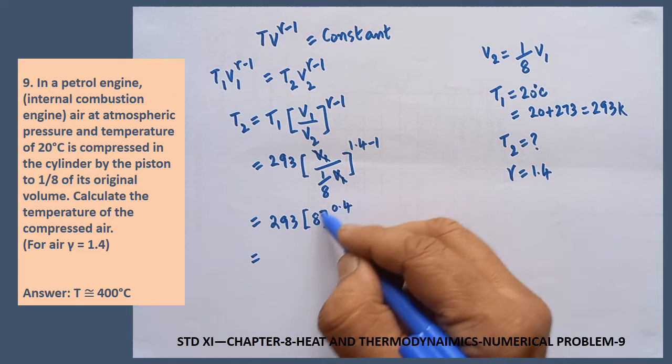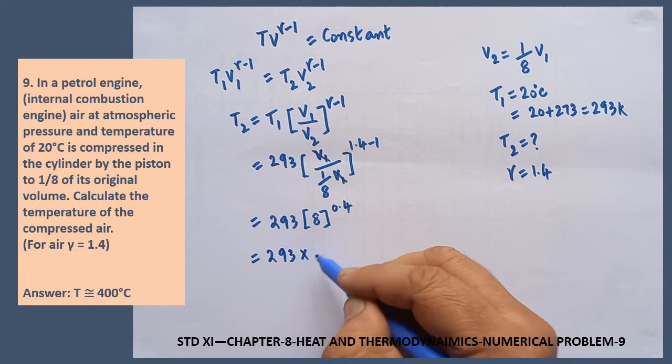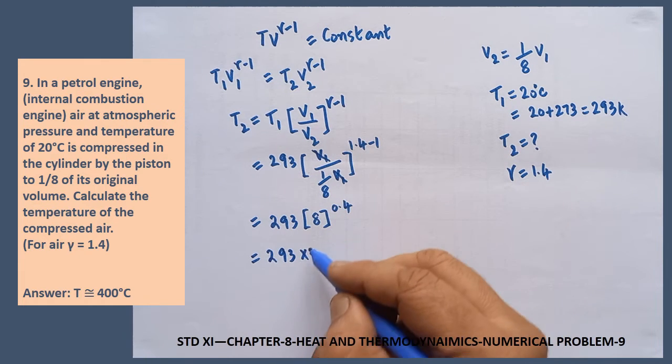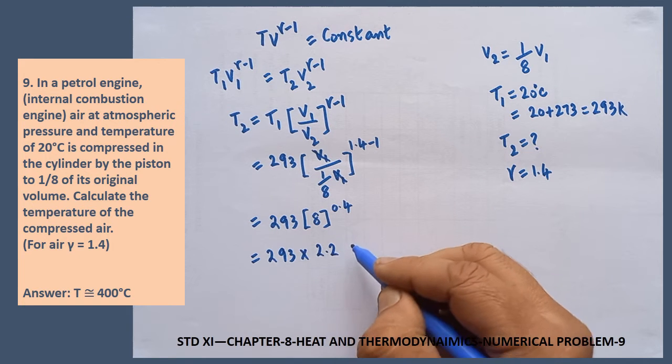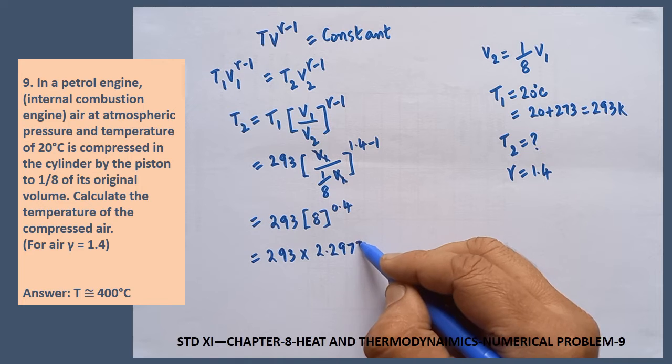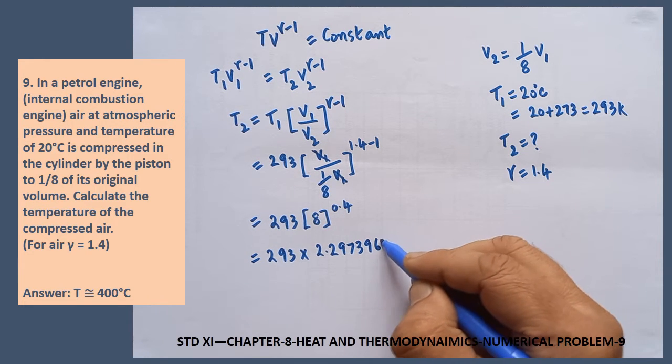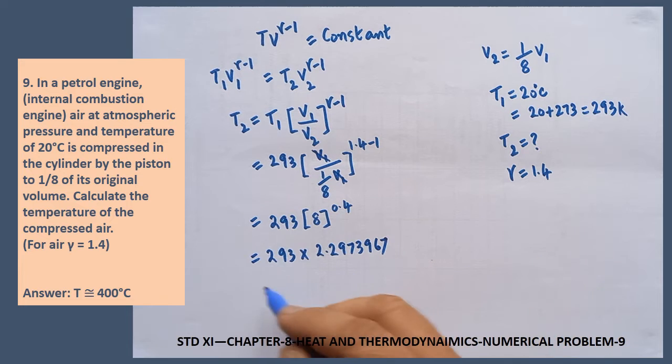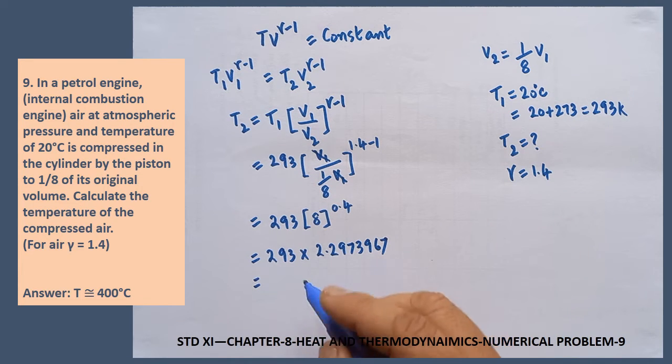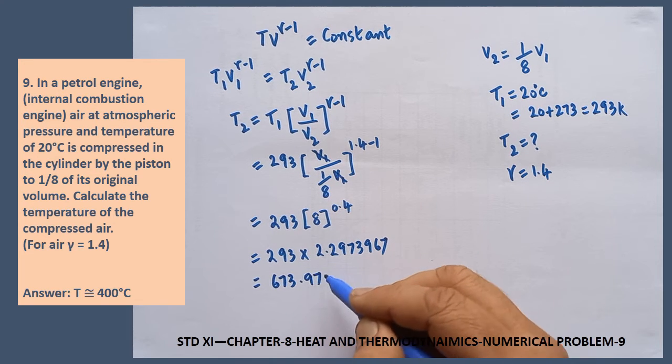So I have calculated this part with the help of calculator, 293 into 8 to the power of 0.4 is equal to 2.2973967, just to get the accuracy I have written. Multiply both, you will get 673.97 Kelvin.